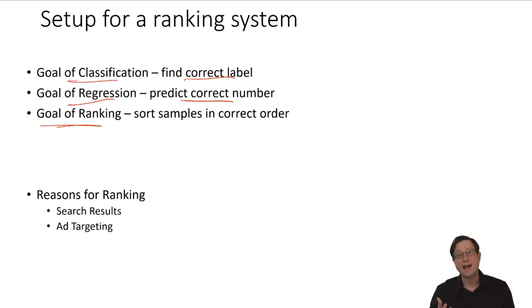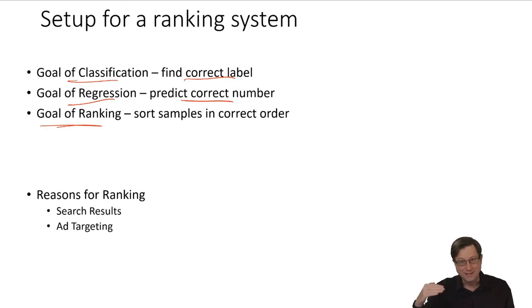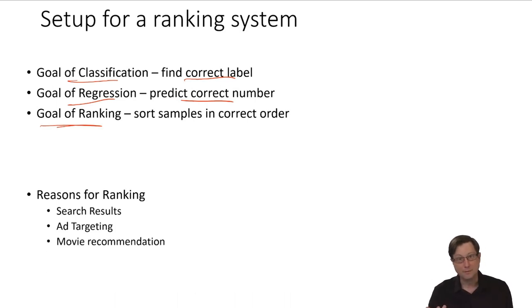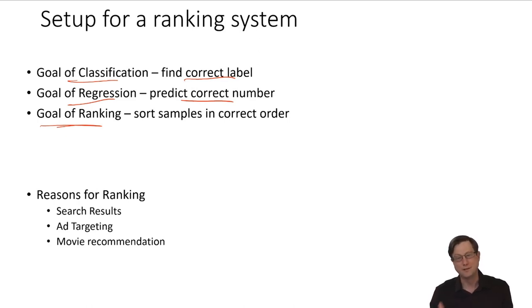You see ranking in a lot of different places. Ad targeting — you have a collection of ads and people have bid to have their ad shown when it's relevant. The question is, for this user in this context, whatever the user is trying to do or think about now, which of these thousands, tens of thousands, millions of potential ads should I allow to compete in an auction to be shown to the user? Recommendations is another place — you want to show users other movies that people like them enjoyed. The user and their history is the query to the database of movies.